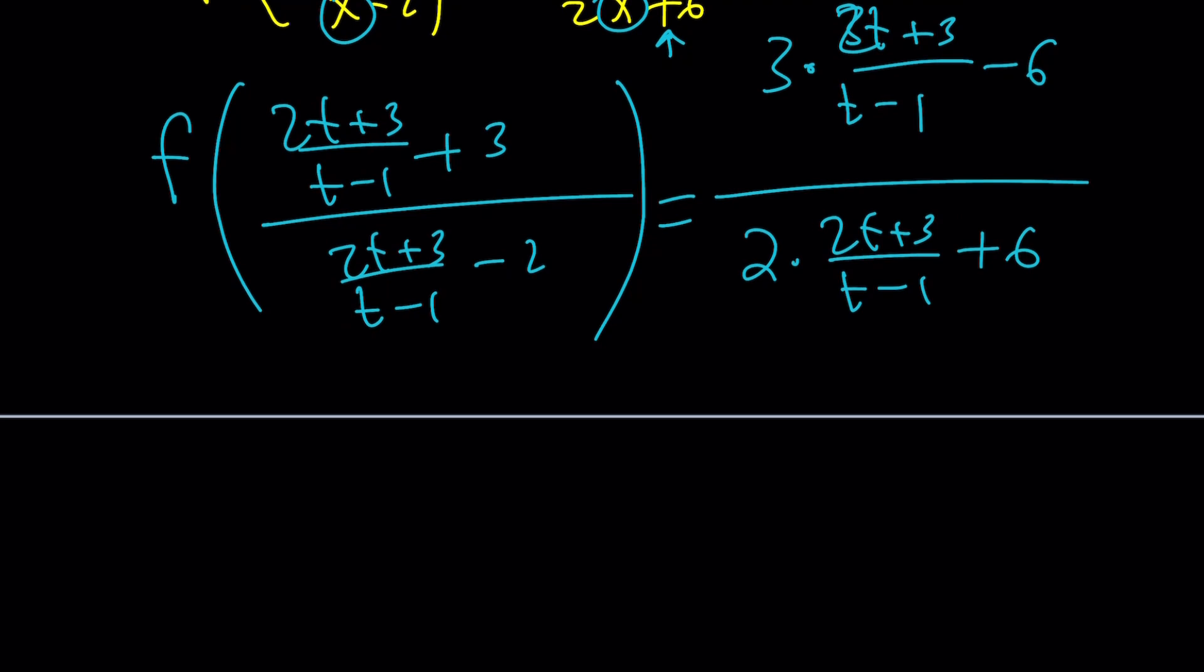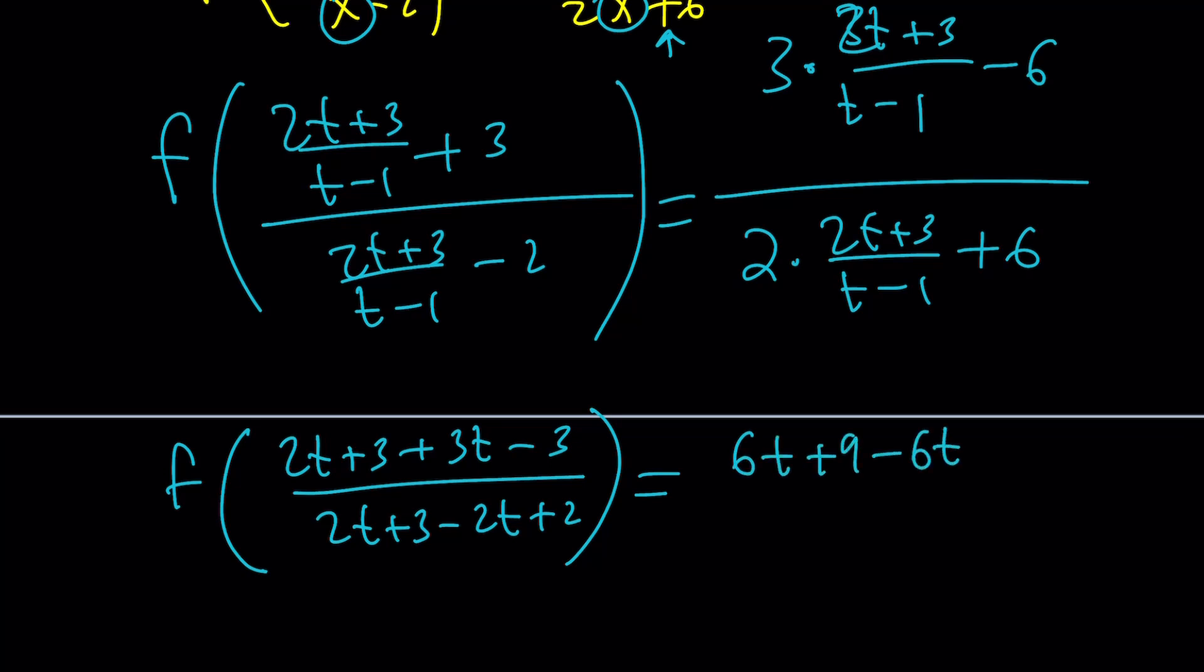Now, if you simplify the left hand side, you're going to get 2t plus 3 and then plus 3t minus 3 by making a common denominator. And then at the bottom, you're going to get 2t plus 3 minus 2t plus 2. Why did I not include the denominators t minus 1? Because they are the same. When we flip and multiply, they're going to cancel out. Here, the same thing happens. So, 6t plus 9 minus 6t plus 6. Again, I'm ignoring t minus 1 because they're going to cancel out. And at the bottom, 4t plus 6 plus 6t minus 6.